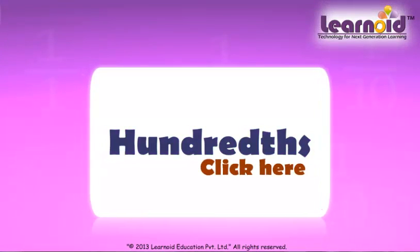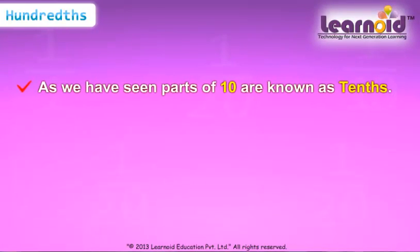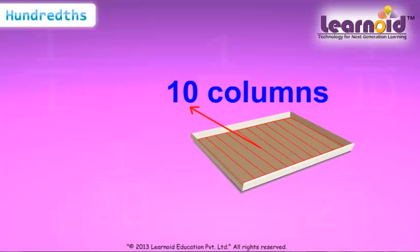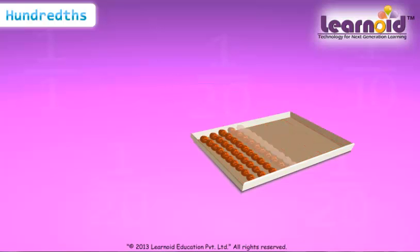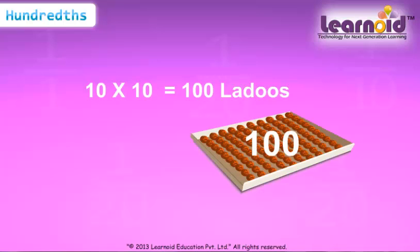Today we will learn Parts of 100. As we have seen, parts of 10 are known as 10s. The box of Ladoos has 10 columns. If we fill 10 Ladoos in each column, we need a total of 10 into 10, which is equal to 100 Ladoos. Now the box contains 100 Ladoos.